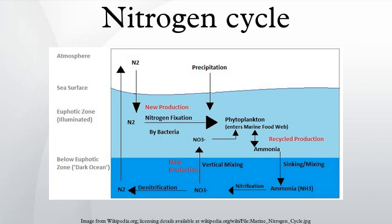A few non-legumes can also form such symbioses. Today, about 30% of the total fixed nitrogen is produced industrially using the Haber-Bosch process, which uses high temperatures and pressures to convert nitrogen gas and a hydrogen source into ammonia.